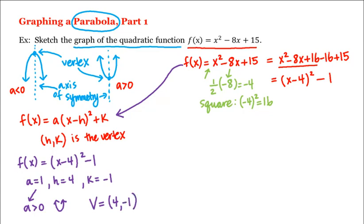So let's plot our vertex. Let's say that this is the y-axis and this is the x-axis. And let's say that this is 1, 2, 3, 4, and that this is -1, and our vertex is here at (4, -1).